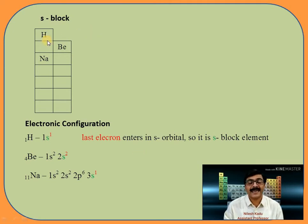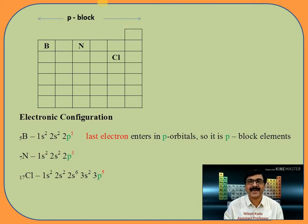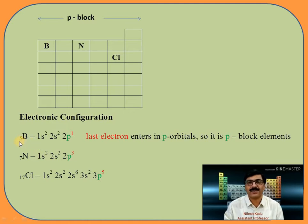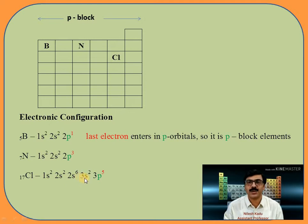Thus hydrogen, beryllium, and sodium are S block elements. Now we can see what is P block. I will take three elements: boron, nitrogen, and chlorine. The atomic number of boron is 5 and its electronic configuration is 1s2 2s2 2p1. The electronic configuration of nitrogen is 1s2 2s2 2p3. And the electronic configuration of chlorine is 1s2 2s2 2p6 3s2 3p5.